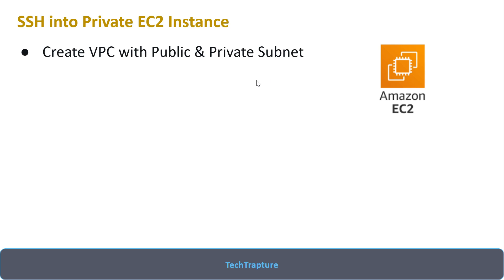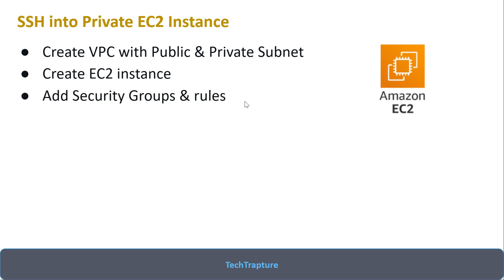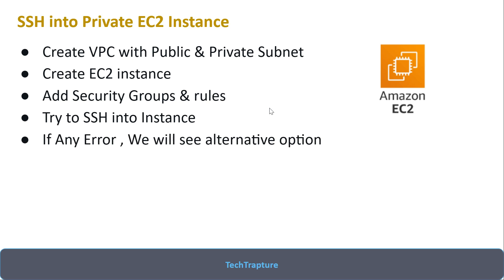First, I will create one VPC with a public and private subnet — I am not going to use the default VPC, so I will create my own VPC with public and private subnets and the required route tables. Then I will create a basic EC2 instance, add the required security group to allow traffic on port 22, and try to SSH into it. I'll deliberately get an error, troubleshoot it, and look for the alternative option to SSH into a private EC2 instance.